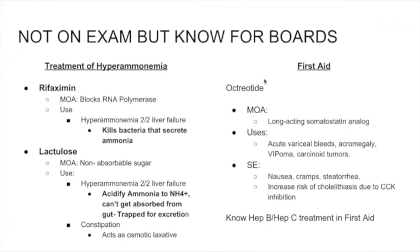One more drug worth knowing is octreotide, a somatostatin analog. Somatostatin is a hormone secreted to stop gut enzymes from working. Octreotide is used for acute variceal bleeding, acromegaly, VIPoma, and carcinoid tumors. The key takeaway is that octreotide is a somatostatin analog used for variceal bleeds.